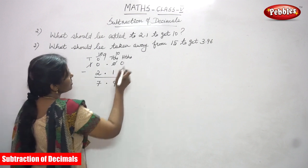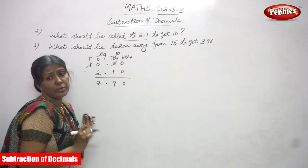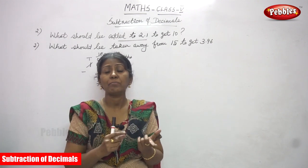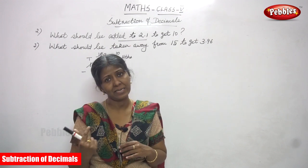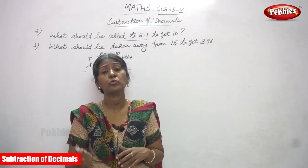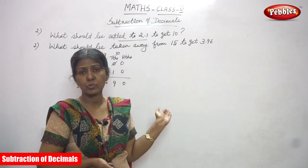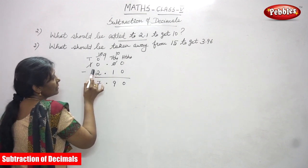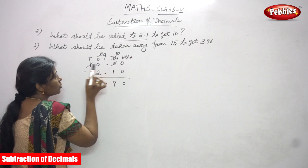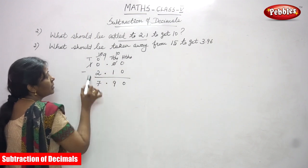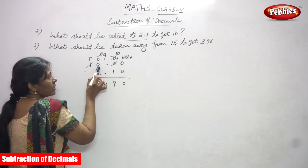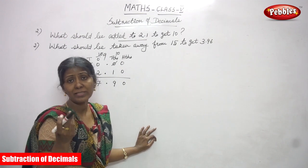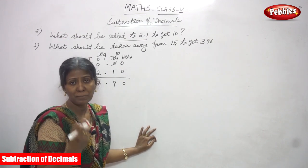Look at this number again. What should be added to 2.1 to get 10? That means you have to add a particular number with 2.1 and you will get the result 10. That means you have to subtract 2.1 from 10. That is what I have done. So, first you start by writing 10. After that, you have to subtract 2.1 from 10. 10 is a whole number, so we have to write all the numbers according to the place value.